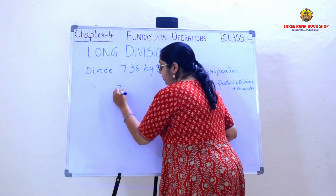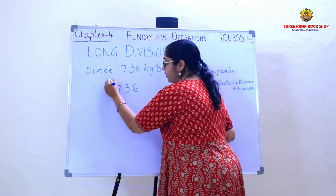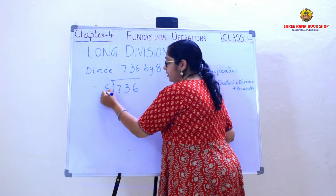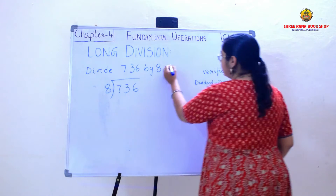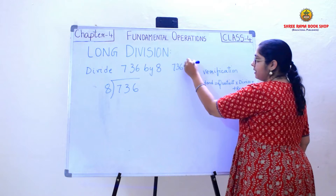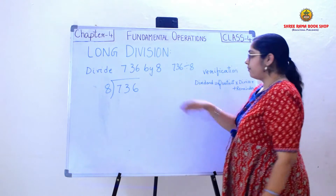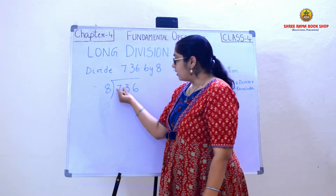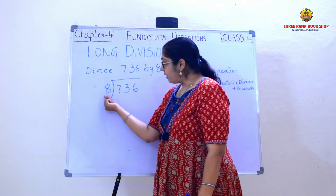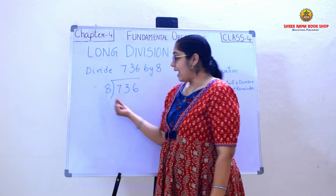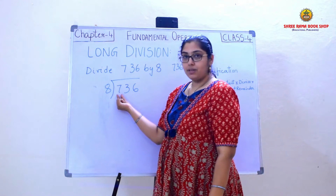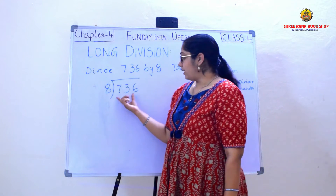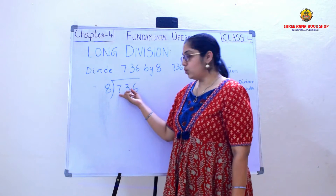So 736, which is the dividend, should be written inside and 8 should be written outside, because this is 736 divided by 8. Now here in this place I have 7 and the divisor is 8. I can't take only 7 because 7 is less than 8, so I need to consider the first two digits.